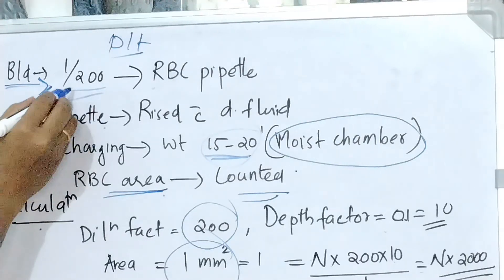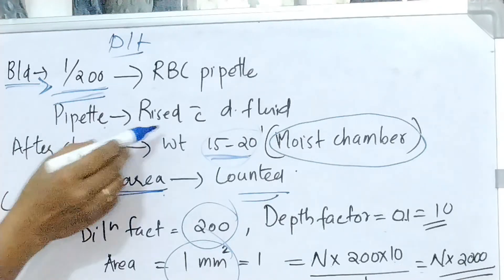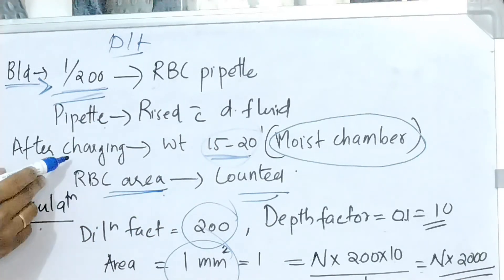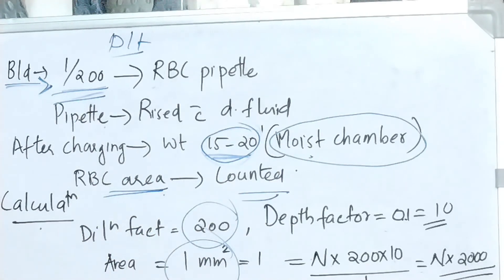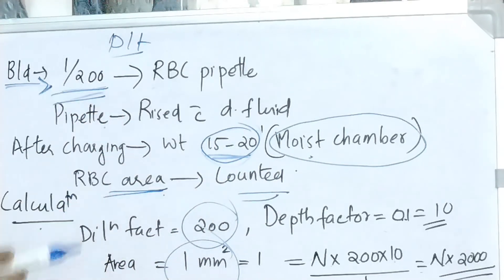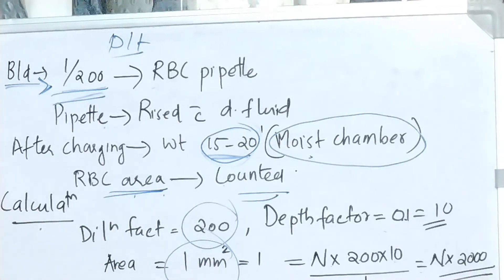For platelet count, we are using RBC pipette and 1 in 200 dilution. The pipette should be rinsed with diluting fluid. Adherence of platelet to the glass surface and after charge. Keep it inside a moist chamber for 15 to 20 minutes. Prevent evaporation of fluid from the chamber. Here we are counting the platelets present in the whole RBC area.